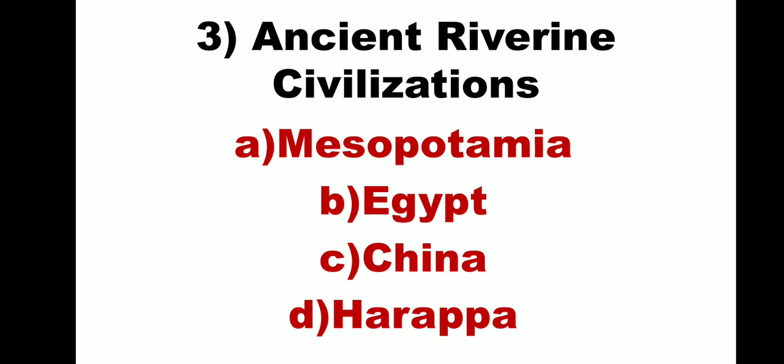Let us see the Harappan civilization, which is the earliest civilization of the Indian subcontinent. It flourished in the Indus Valley — 'Indus' is the English word for Sindhu. Harappa in Punjab and Mohenjo-daro in Sindh are the two sites of Harappan civilization which were discovered first; these are now in Pakistan. Famous sites of Harappan civilization in India are Lothal and Dholavira in Gujarat, and Kalibangan in Rajasthan.